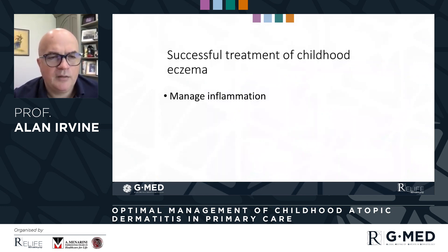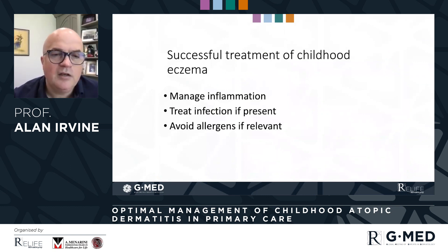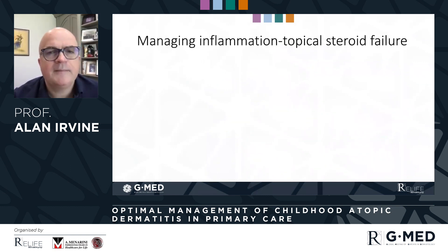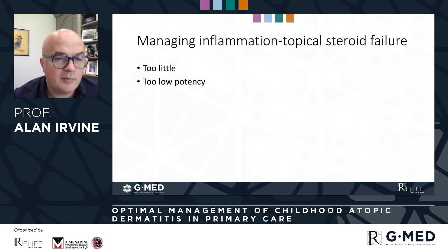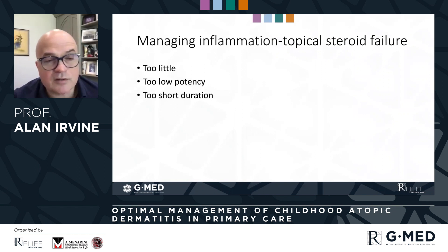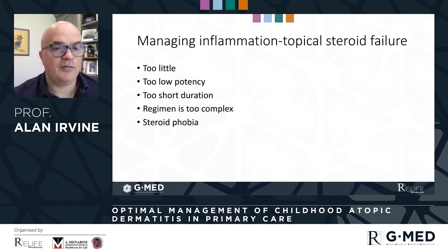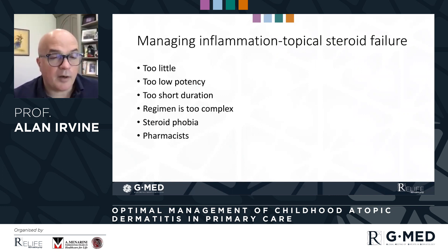How do we successfully treat it? We manage inflammation, we treat infection if it's there, we avoid allergens if they're relevant. Why do topical corticosteroids not work often in atopic dermatitis? Often too little is prescribed, the potencies are wrong, the duration is wrong, the regimen is too complex — that's important. Steroid phobia or steroid resistance is common, and pharmacists can sometimes interfere with our instructions.